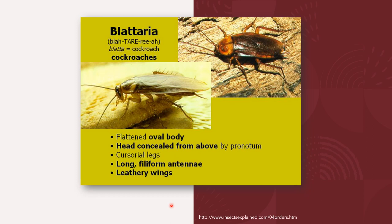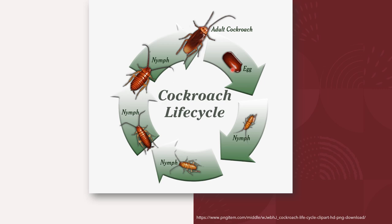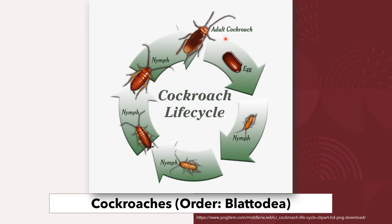Cockroaches also exhibit hemimetabolous development and belong to the order Blattodea, from the word 'blatta' meaning cockroach. Morphologically, they have a flattened oval body, the head is concealed from above by the pronotum, they have cursorial legs, long filiform antennae, and leathery wings. This diagram shows the life cycle of the cockroach with developmental stages from egg, through nymphs, to adult.